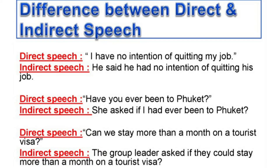The difference between direct and indirect speech: Direct speech — 'I have no intention of quitting my job.' Here the person is directly saying they have not thought of leaving their job — it is their direct word of mouth. Indirect speech — 'He said he had no intention of quitting his job.' The same message is conveyed but through another person's words, meaning he had no idea of leaving his job.